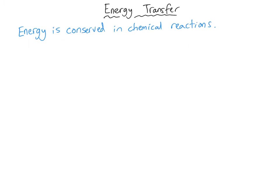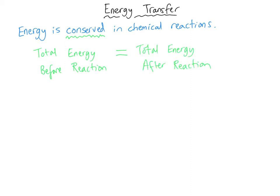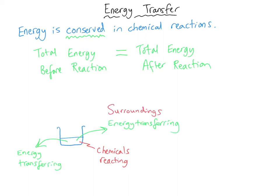Let's start by taking a look at energy transfers during chemical reactions. The single most important fact in this video is that energy is conserved during a chemical reaction. The amount of energy in the universe before the chemical reaction happens will be exactly equal to the amount of energy in the universe after the chemical reaction. So if a reaction is transferring energy from the chemicals into the surroundings, the product molecules have got less energy than they had at the beginning.